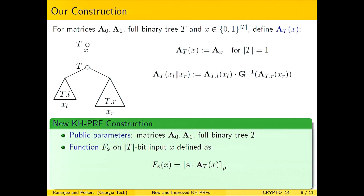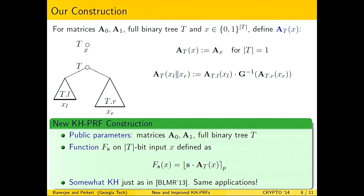This gives rise to our new construction. The public parameters are Z_q matrices A_0, A_1, and the full binary tree T. To evaluate the function, we evaluate A_T, pre-multiply with the secret key s, and round. Since we also round, we are only somewhat key homomorphic, just as in the Boneh et al. construction, and we have the same applications.